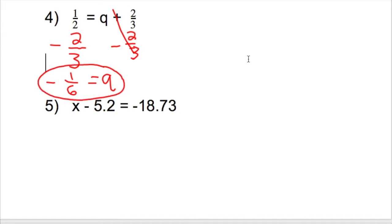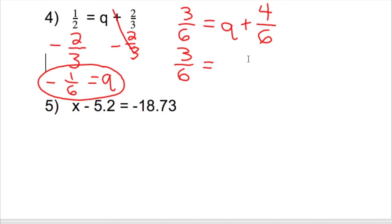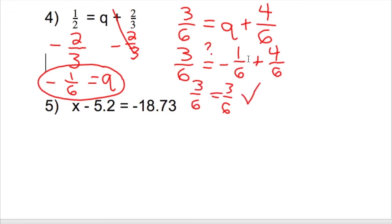Let's make sure this is right. Rewriting the original problem: 1 half equals q plus 2 thirds. Using the common denominator forms: 1 half was 3 sixths, and 2 thirds was 4 sixths. Substituting q as negative 1 sixth: 3 sixths equals negative 1 sixth plus 4 sixths. Negative 1 sixth plus 4 sixths is 3 sixths. So 3 sixths equals 3 sixths — our answer is correct.